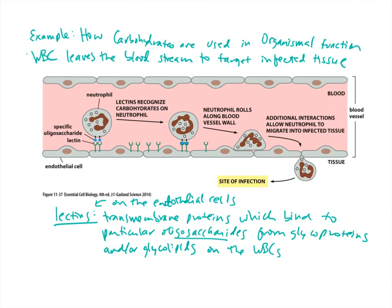Then the white blood cell can sneak in between the little cracks in the endothelial cells. This means those white blood cells, which are immune cells, can find the site of infection and start to fight off whatever that infection might be. This is a really key mechanism allowing white blood cells to move through the whole body and then find a particular location and sneak in. There are some great ways to see this in action — check out movie 11.7, which shows some amazing microscopy of these white blood cells rolling along blood vessels and then entering deeper tissue.